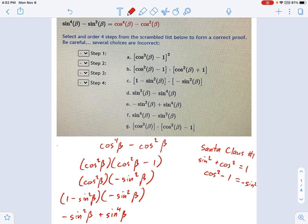Step one was GCF. I wanted to pull out a cosine squared. As I look down this list, here we are. Let's go right here. So that's going to be step number one, G.